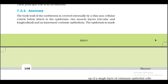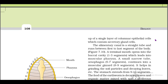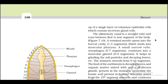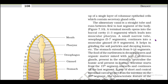The body wall of the earthworm is covered externally by a thin non-cellular cuticle, below which is the epidermis, two muscle layers (circular and longitudinal), and the innermost coelomic epithelium. The epidermis is made up of a single layer of columnar epithelial cells which contain secretory gland cells. The alimentary canal is a straight tube running from the first to the last segment of the body (figure 7.10a). The terminal mouth opens into the buccal cavity (segments 1 to 3).